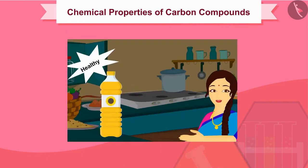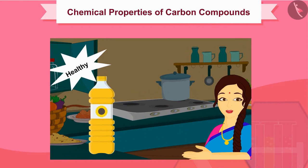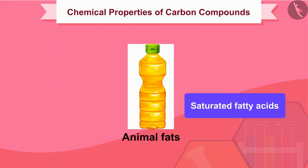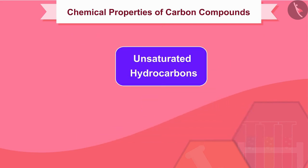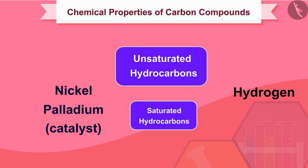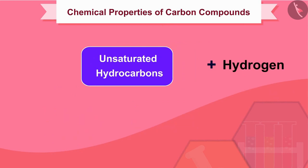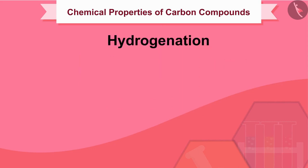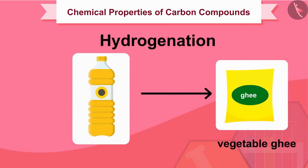Vegetable oils are often considered healthy. Animal fats contain saturated fatty acids, which are considered harmful to health, so oils containing unsaturated fatty acids should be chosen for cooking. Unsaturated hydrocarbons add hydrogen in the presence of a catalyst such as nickel or palladium to form saturated hydrocarbons. The addition of hydrogen to an unsaturated hydrocarbon is called hydrogenation, and this process is used to prepare vegetable ghee from vegetable oils.